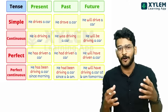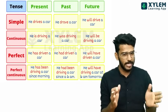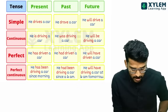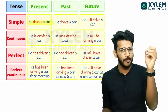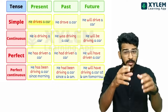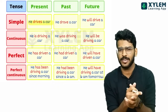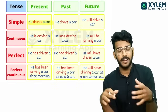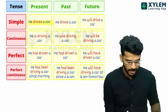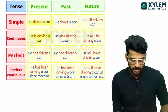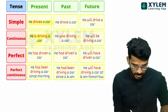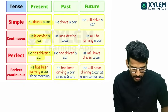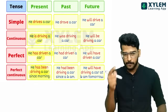I am going to learn simple examples. Simple present: he drives a car. Present continuous: he is driving a car. Present perfect: he has driven a car. Present perfect continuous: he has been driving a car since morning.